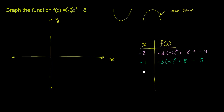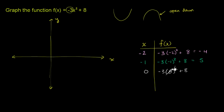What does f of x equal when x is 0? This is easy to compute. Negative 3 times 0 squared plus 8 simplifies to 0 plus 8, so you're just left with 8.